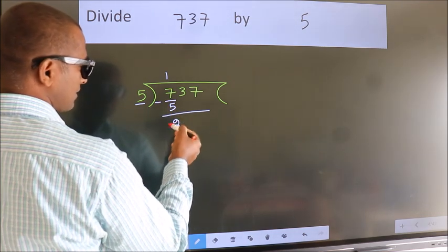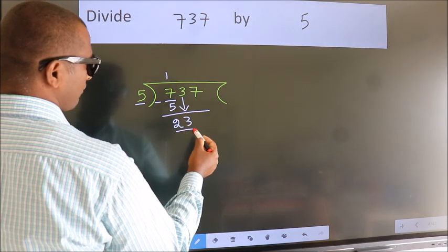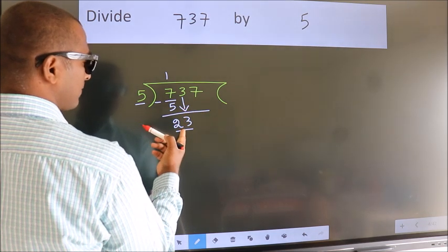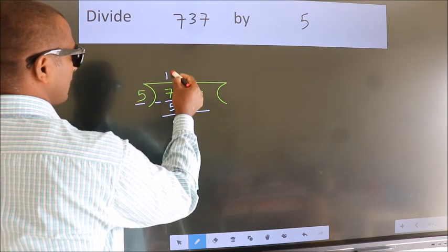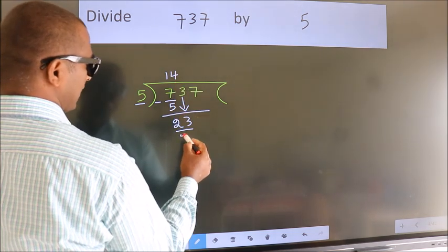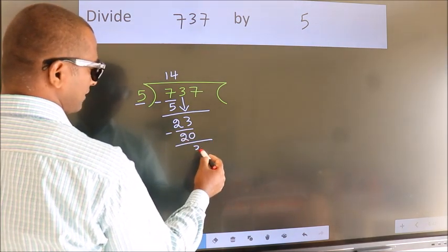After this bring down the beside number. So 3 down. So 23. A number close to 23 in the 5 table is 5 times 4 is 20. Now we subtract. We get 3.